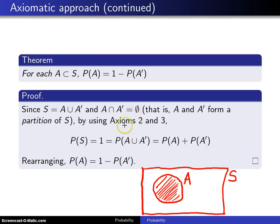Then by using axioms 2 and 3, you get the following string of equalities, and let's go through these one by one. First of all, where does this one come from? P of S equals 1. Well, that comes from the third axiom directly.